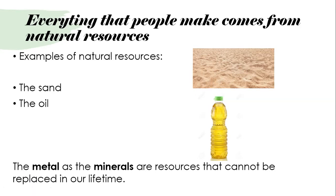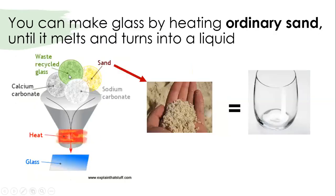Let's see some examples. You can make glass by heating ordinary sand until it melts and turns into a liquid. Here you can see the process: people use waste recycled glass, sand, calcium carbonate, sodium carbonate, plus heat — and the result is glass.